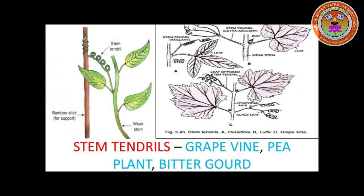Stem tendrils. A long, wiry, spirally coiled, delicate, sensitive structure formed by the modification of buds are called stem tendrils. These are meant for climbing. Stem tendrils may be axillary — example: Passiflora; extra-axillary — example: Loofah; apical bud — example: Grapevine; or floral bud — example: Antigonon.